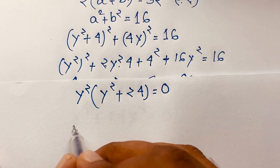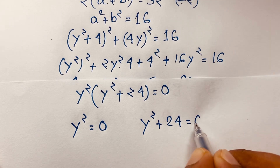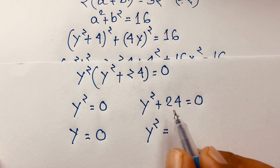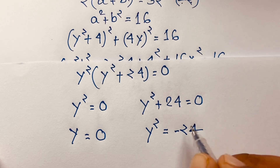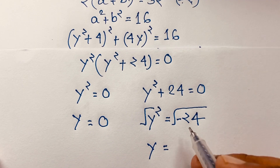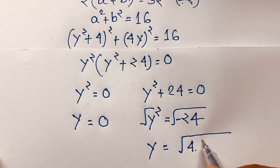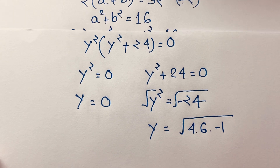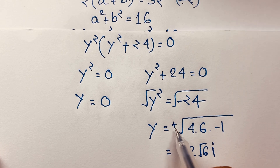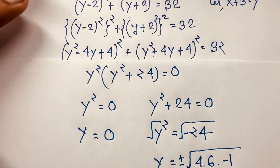Factoring: y²(y² + 24) = 0. So either y² = 0, which gives y = 0, or y² + 24 = 0, which gives y² = −24. Taking the square root, y = ±√(−24) = ±√(4 × 6 × −1) = ±2√6·i.